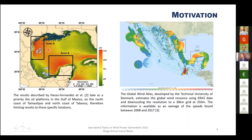These prior works and others in the territory don't show specific zones — they only highlight areas with high wind resource. Identifying specific zones is the objective of the work being presented today.